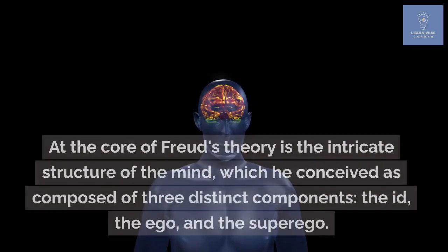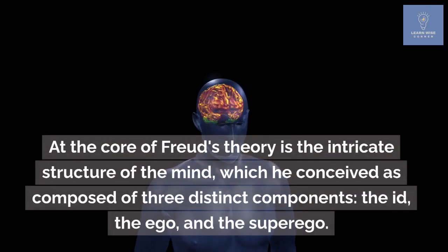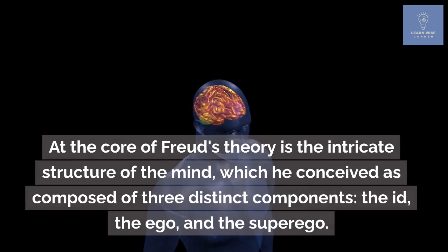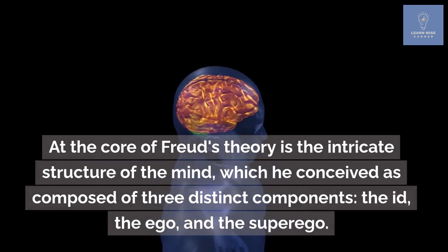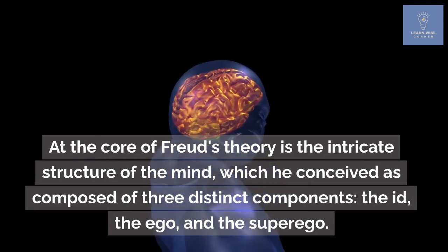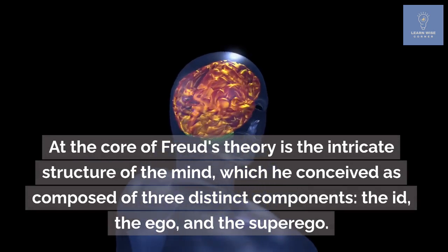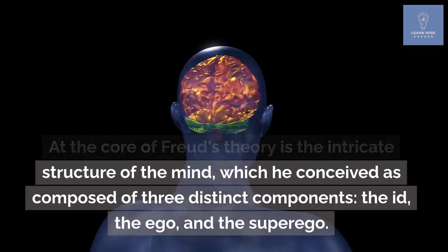At the core of Freud's theory is the intricate structure of the mind, which he conceived as composed of three distinct components: the id, the ego, and the superego.